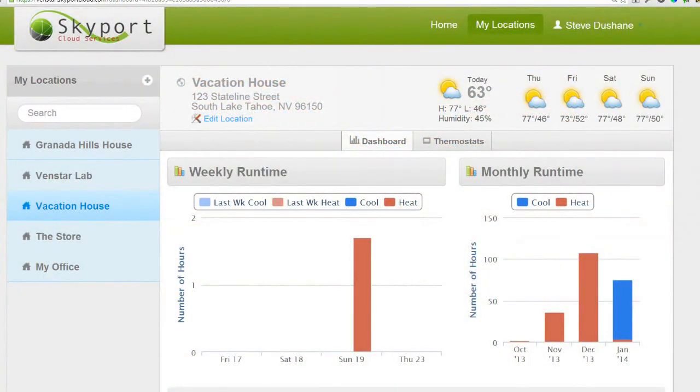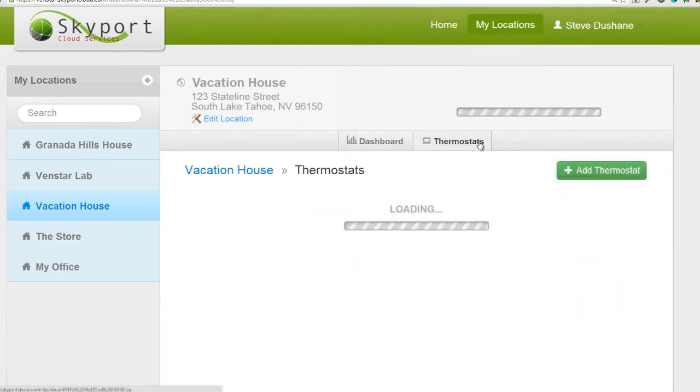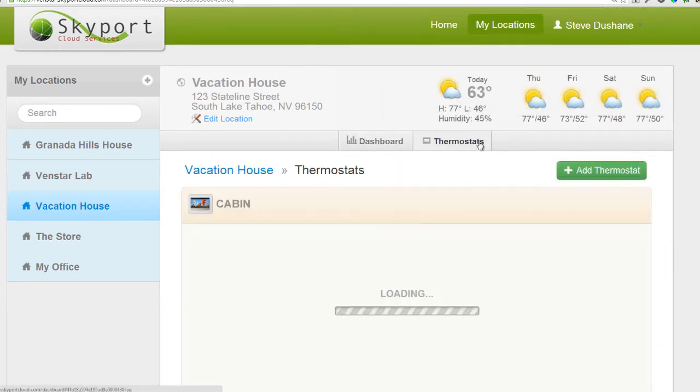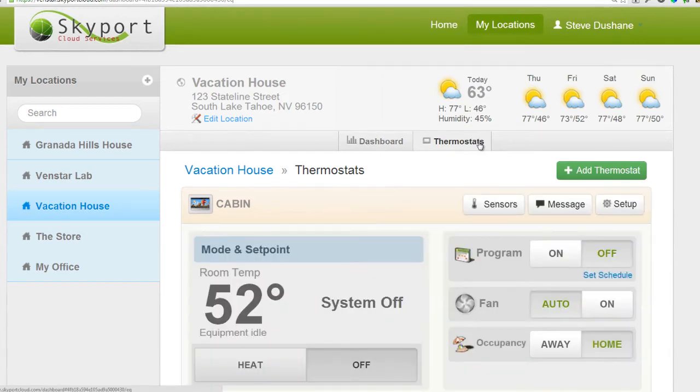Now that you have your Color Touch set up using your two-wire kit, let me show you how to control Color Touch remotely using Skyport. Once you are logged into your Skyport Cloud account, navigate to the desired location and press the thermostat button. If you want to learn more about our Skyport Cloud service, be sure and watch our video on how to set up your Color Touch with Skyport Cloud.